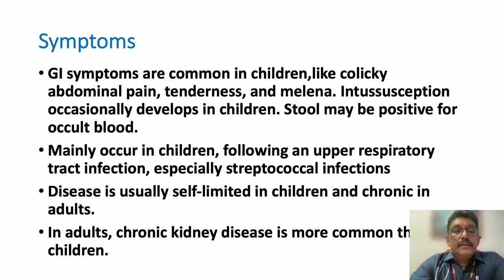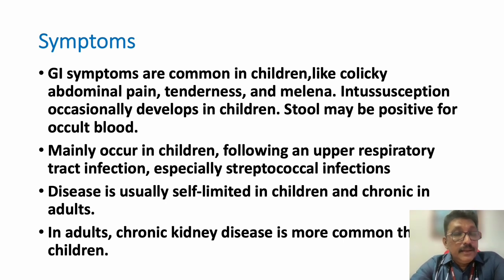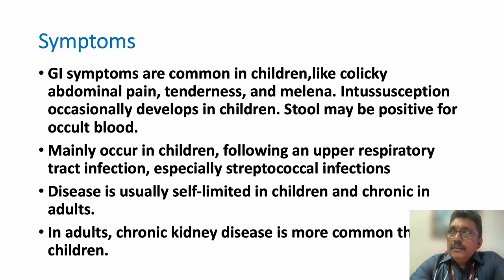Upper respiratory tract infection can occur prior to the skin lesions - it can be due to streptococcal infection. Remember that streptococcal infection itself can produce skin lesions, as in scarlet fever. Many other infections can also cause upper respiratory infection with generalized rashes. Adult-onset Still's disease can have a similar presentation - sore throat, fever, and rashes. There are many differential diagnoses, but fortunately this disease is benign and the lesions are mainly confined to the lower limb.